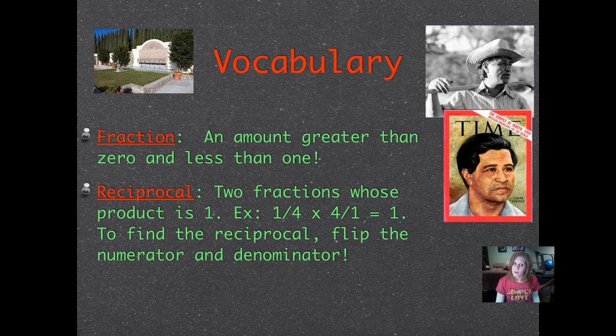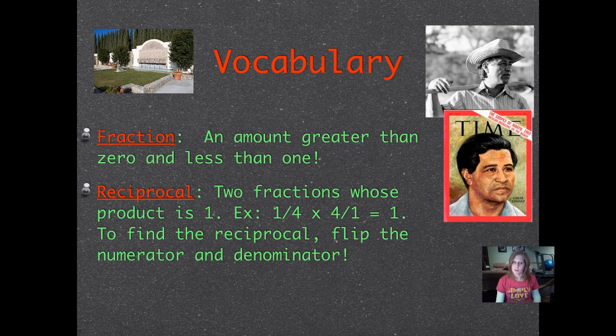We're also using the word reciprocal, which means two fractions whose product is 1. Product, remember, means we're multiplying them together. For example, the reciprocal of 1 fourth is 4 over 1. When you multiply those together, you get 4 over 4, which equals 1. To find the reciprocal, just flip the numerator and denominator.